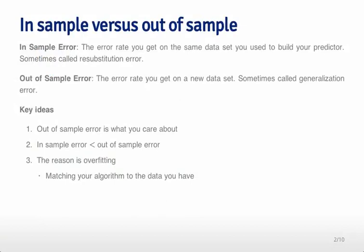In-sample error is the error rate you get on the same data you use to train your predictor. This is sometimes called resubstitution error in the machine learning literature, and in-sample error is always going to be a little bit optimistic for what the error is that you would get on a new sample.